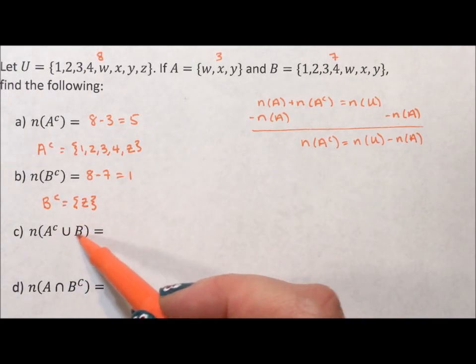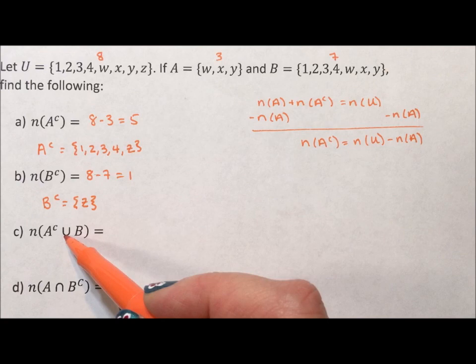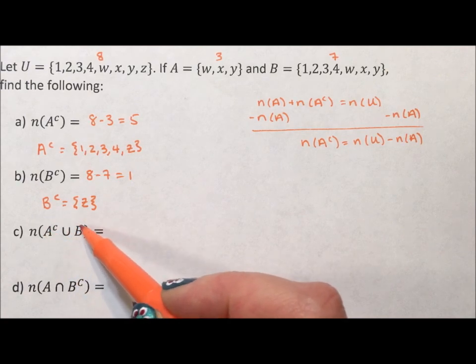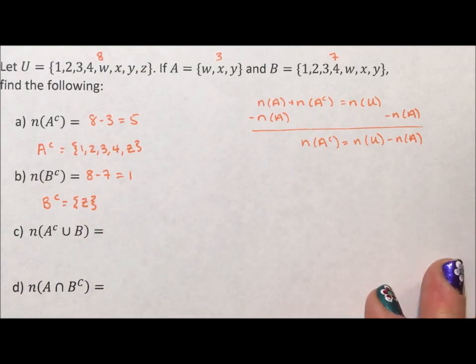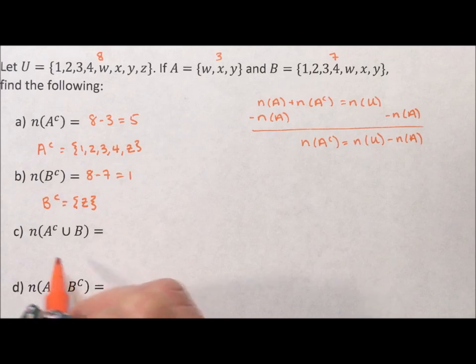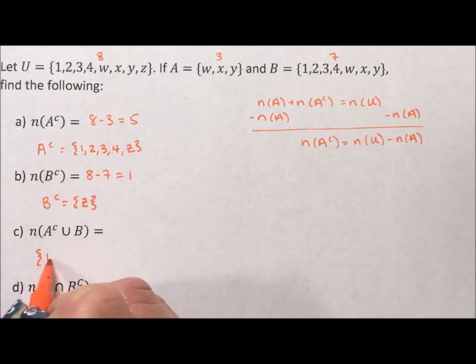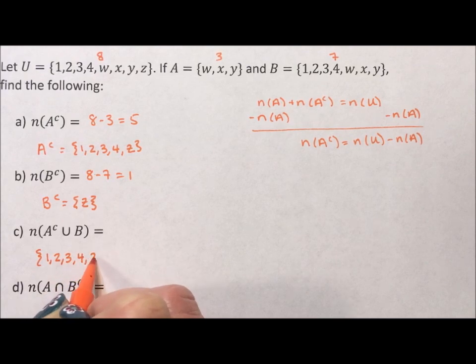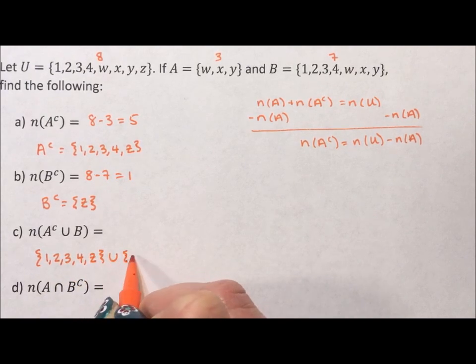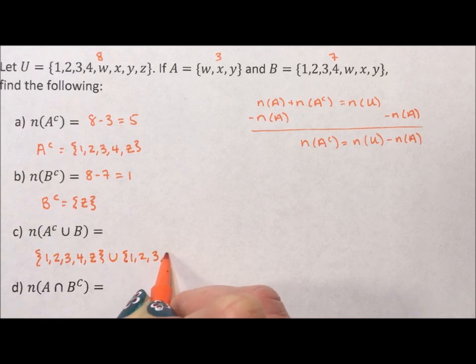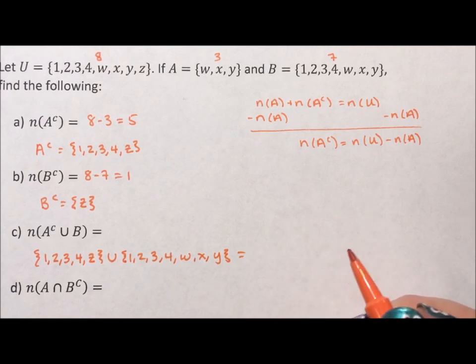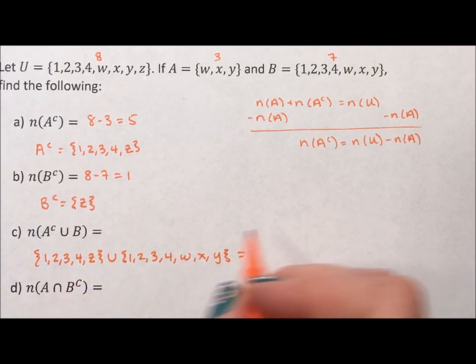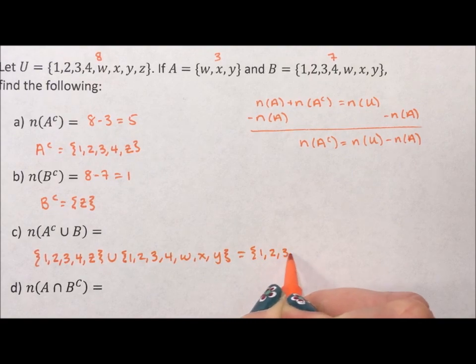Now, when I get to something like this, where I need the complement of A union B, it's much easier to do this with the sets and count than try to do some sort of computation. So A complement, well, I just figured that out, 1, 2, 3, 4, Z, union B. Well, B is 1, 2, 3, 4, W, X, Y. And the union of these is putting it all together. And so if you notice, they both have 1, 2, 3, 4. Now, you don't write the elements twice that appear. We're just listing off elements that happen to be in the universe.